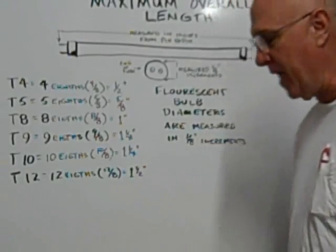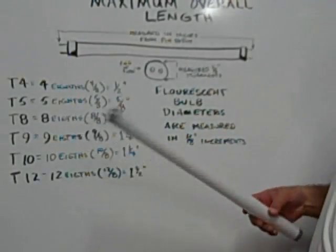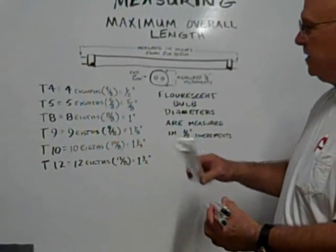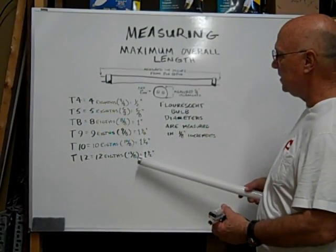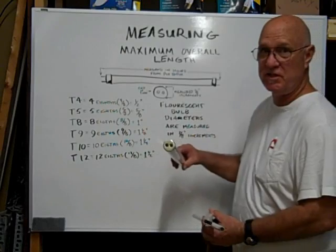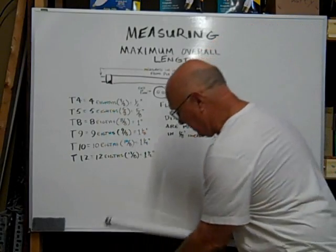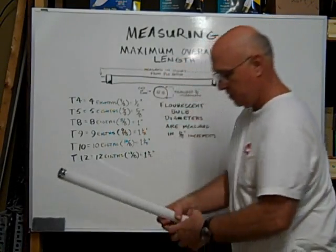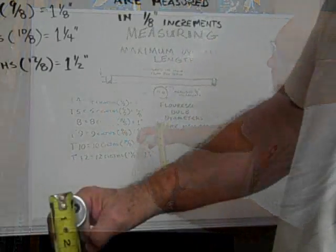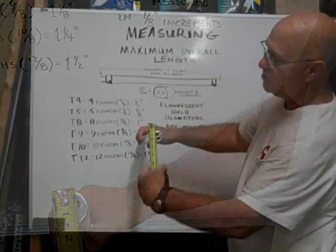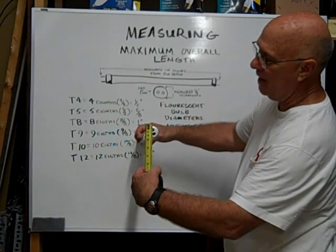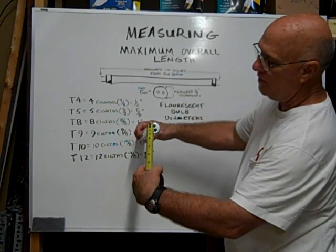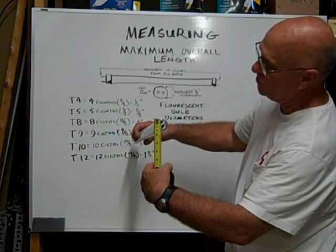The other size bulb we have is a T12. This one, T12, is 12 eighths or one and a half inches in diameter. So to measure a T12, we measure across the bulb and the diameter is one and a half inches.